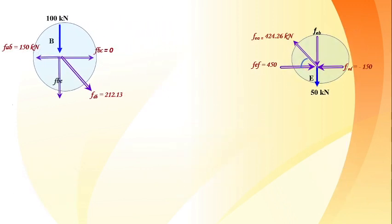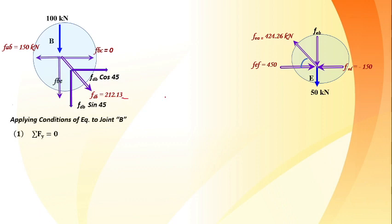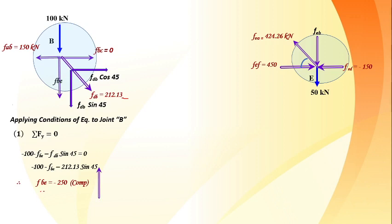Now we perform a random check to verify the analysis. Select any joint where all forces and directions are already known. Choosing joint B: applying sigma Fx = 0: -150 + FBC + FDB × cos45 = 0. Substituting all known values, left-hand side equals right-hand side (zero = zero), confirming the analysis is correct.